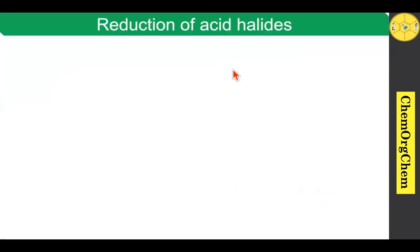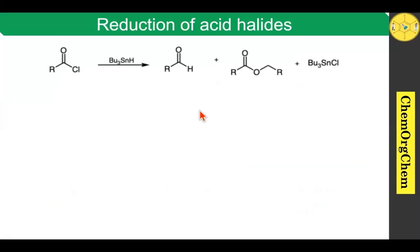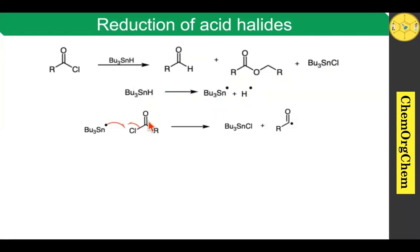Next we move on to reduction of acid chloride. The reduction of acid chloride is not a fancy method to produce the corresponding aldehyde by using tributyltin hydride, since there are a lot of other methods known in literature such as DIBAL-H reduction as well as Rosenmund reduction. Anyway, tributyltin hydride is also able to reduce acid chloride into the corresponding aldehyde, along with the corresponding ester and tributyltin chloride as byproducts. In the mechanism, tributyltin hydride produces tributyltin radical as well as hydrogen radical.